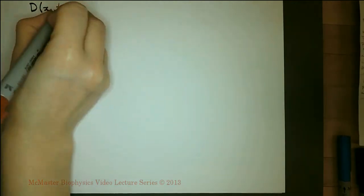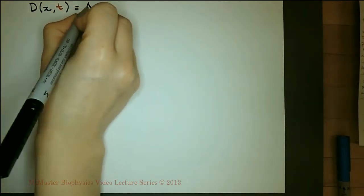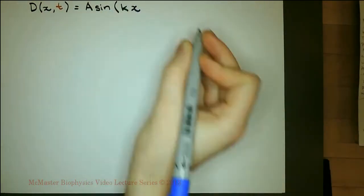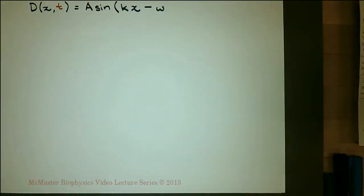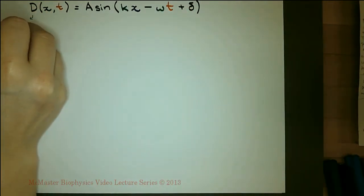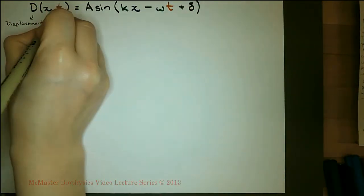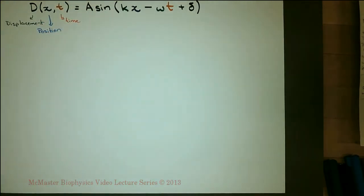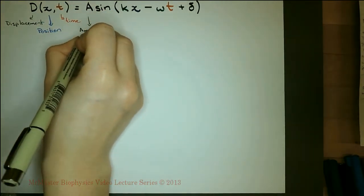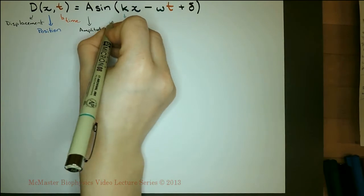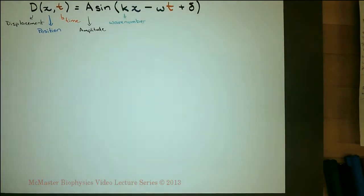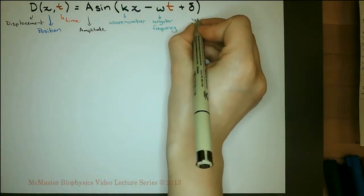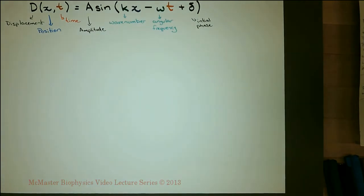A wave source that oscillates with simple harmonic motion generates a sinusoidal wave. Using this equation: d is the displacement of the particle, x is its position, t is the time, a is the amplitude, k is the wave number, omega is the angular frequency, and delta is the initial phase.